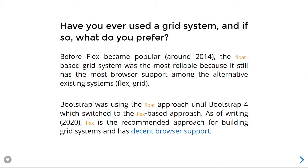Have you ever used a grid system, and if so, what do you prefer? Before flex became popular around 2014, the float-based grid system was the most reliable because it still has the most browser support among the alternative existing systems like flex and grid. Bootstrap was using the float approach until Bootstrap 4, which switched to the flex-based approach. As of writing 2020, flex is the recommended approach for building grid systems and has decent browser support.